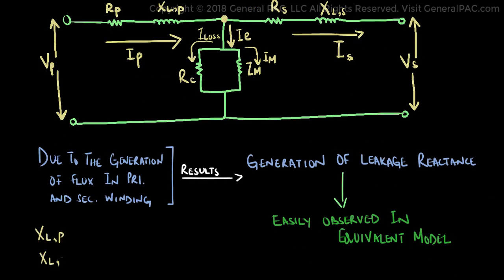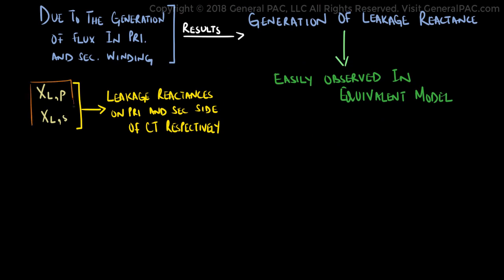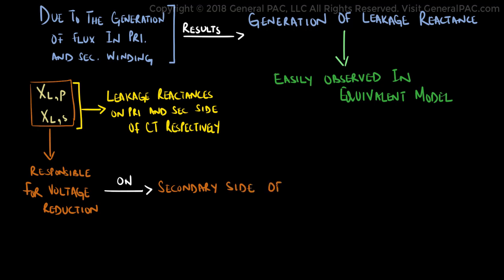XLP and XLS are parameters that describe the leakage reactance of the current transformer. It is responsible for a voltage reduction on the secondary terminal of the current transformer.